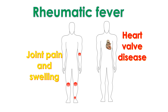A birth defect of the tricuspid valve known as Ebstein's anomaly may also produce tricuspid stenosis. All these conditions can produce a leak of the tricuspid valve along with narrowing of its orifice.